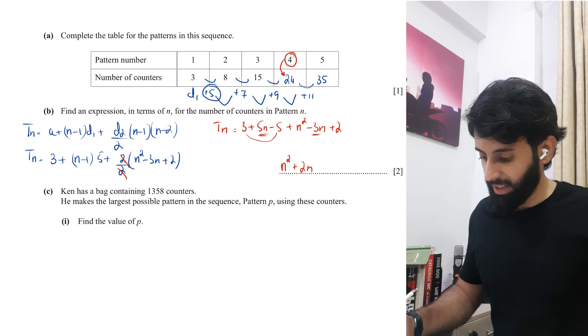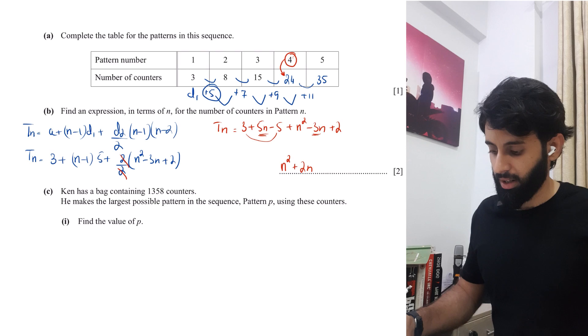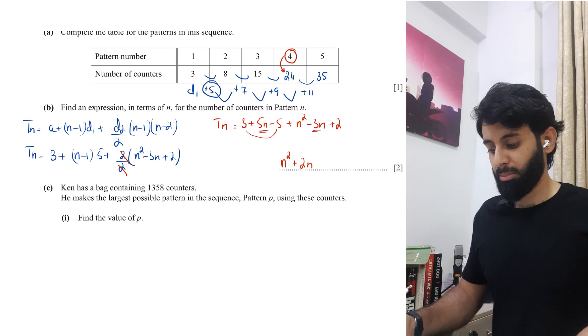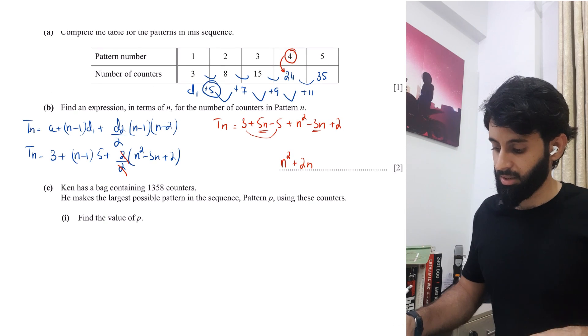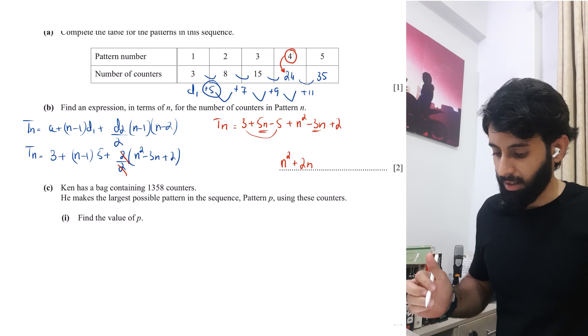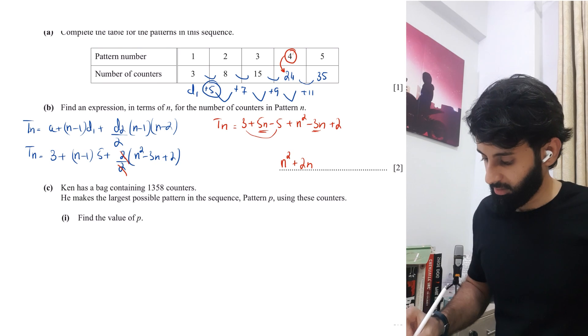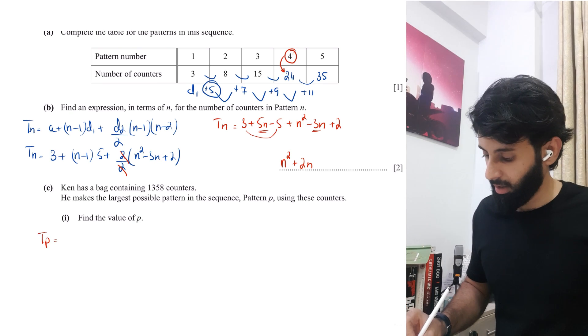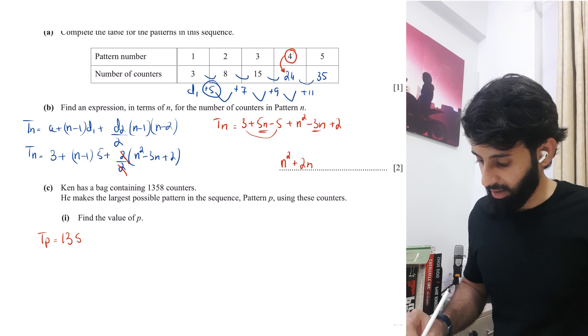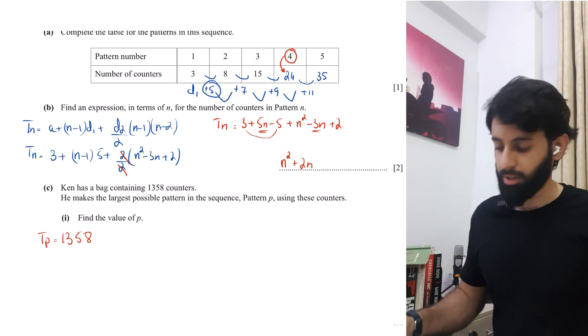Next. Part C says, Ken has a bag containing 1,358 counters. He makes the largest possible pattern in the sequence, pattern P using these counters, find the value of P. Okay. Now pattern P, we don't know what pattern it is. It's P, but we do know that it contains 1,358 counters.